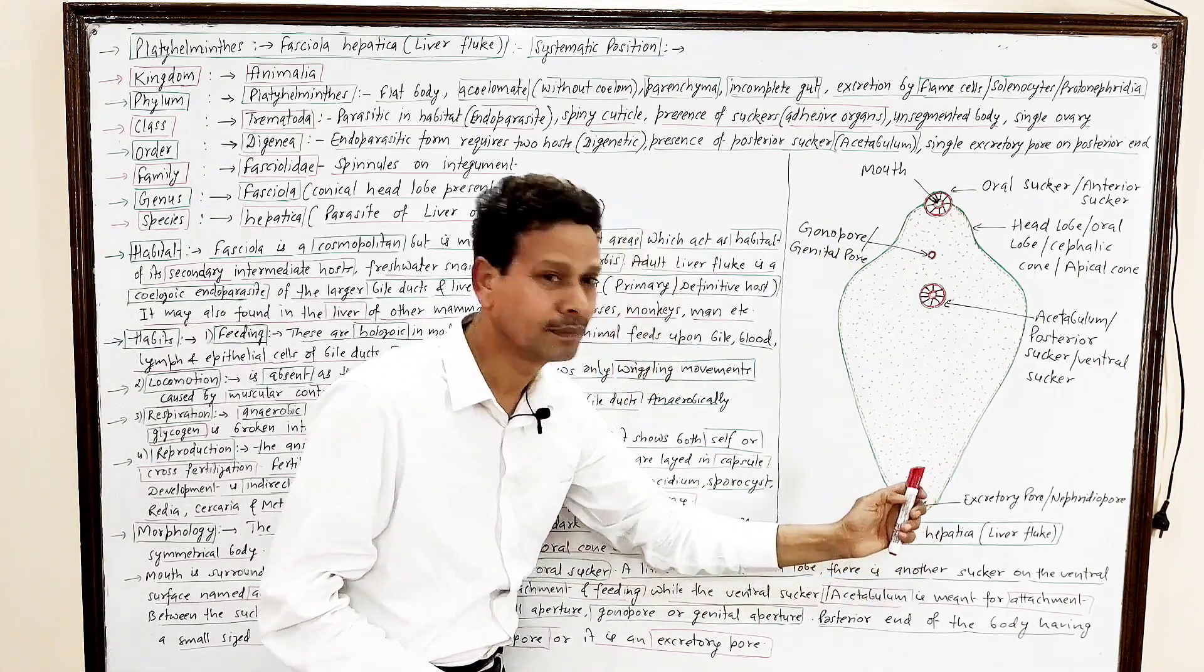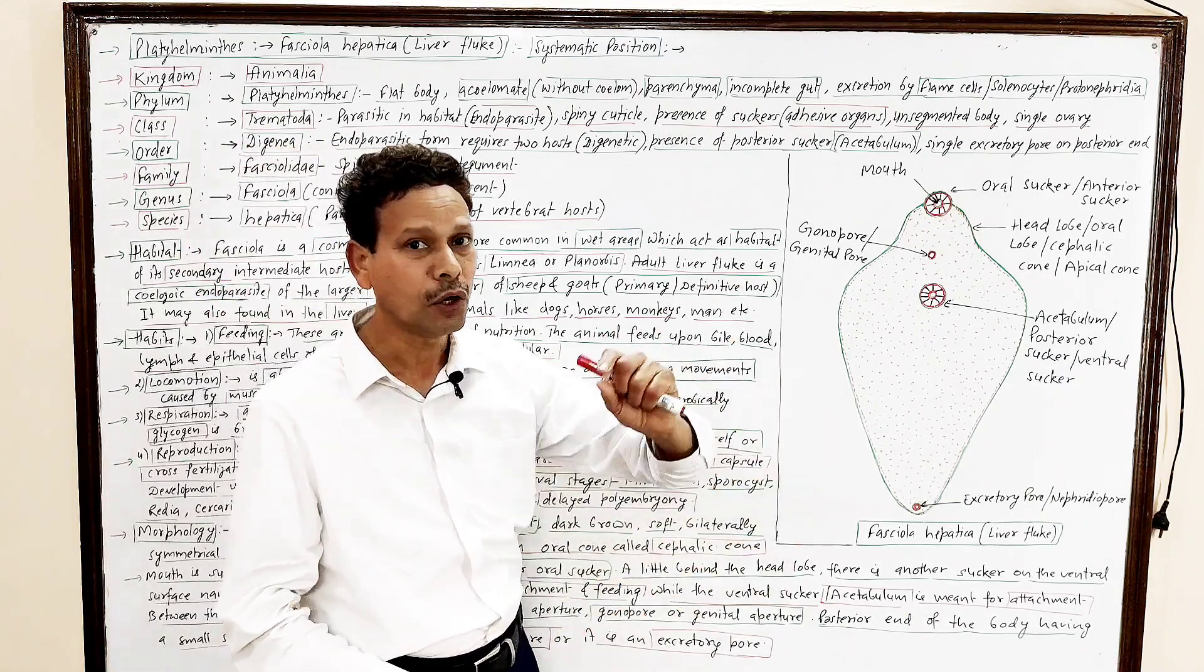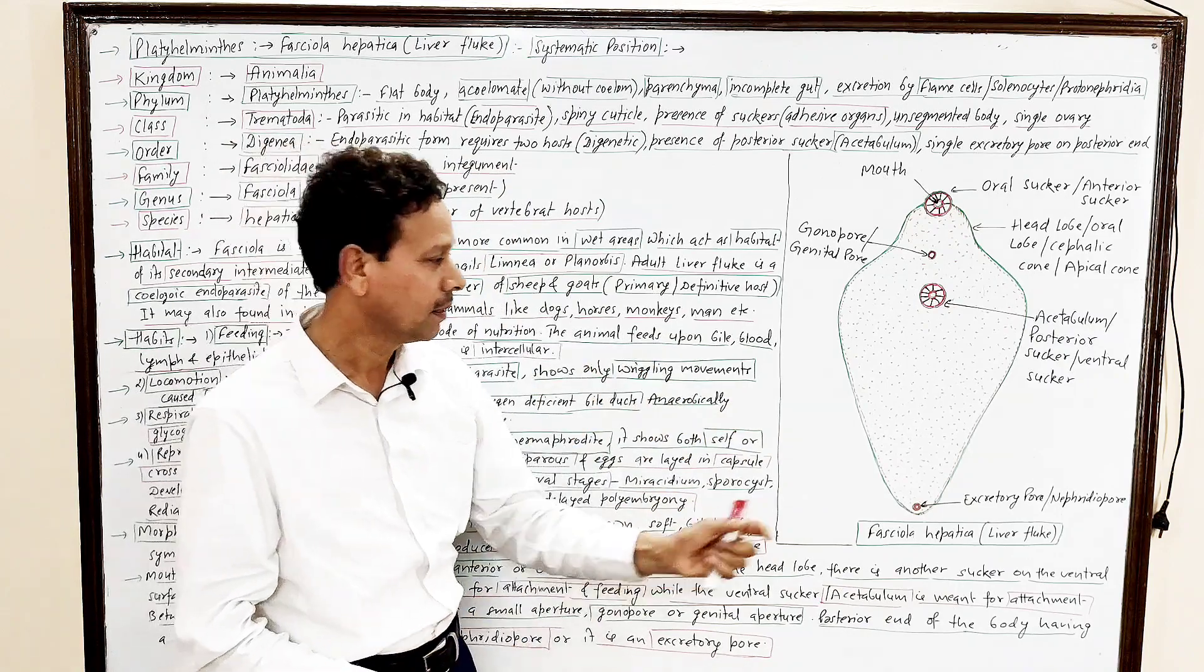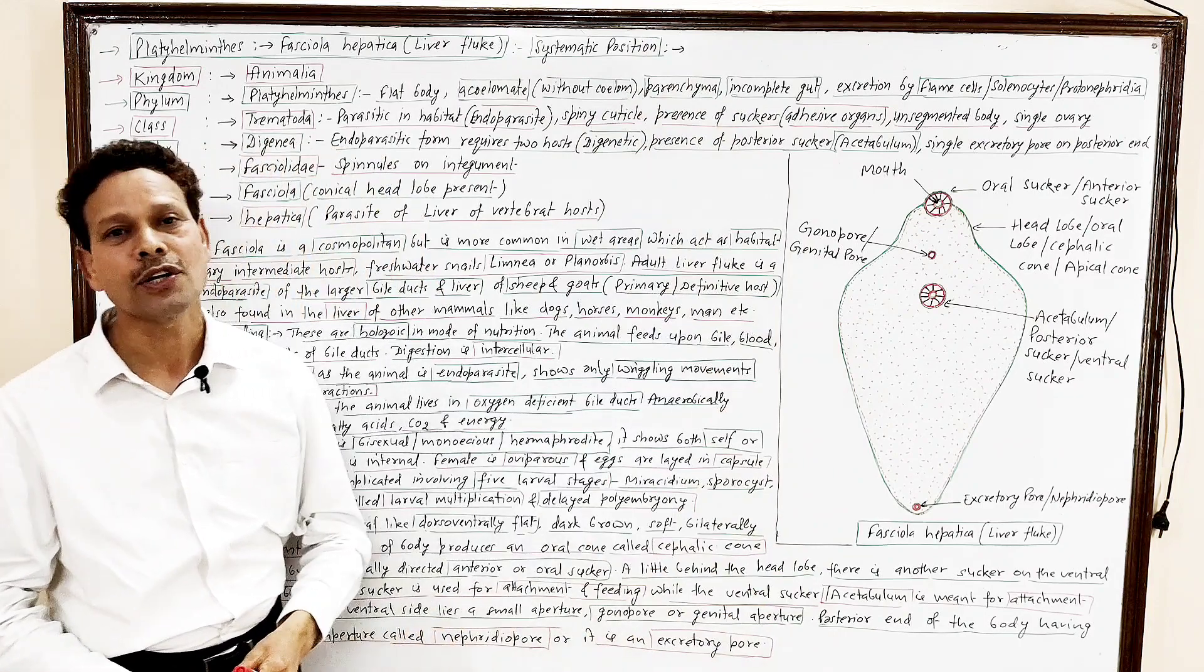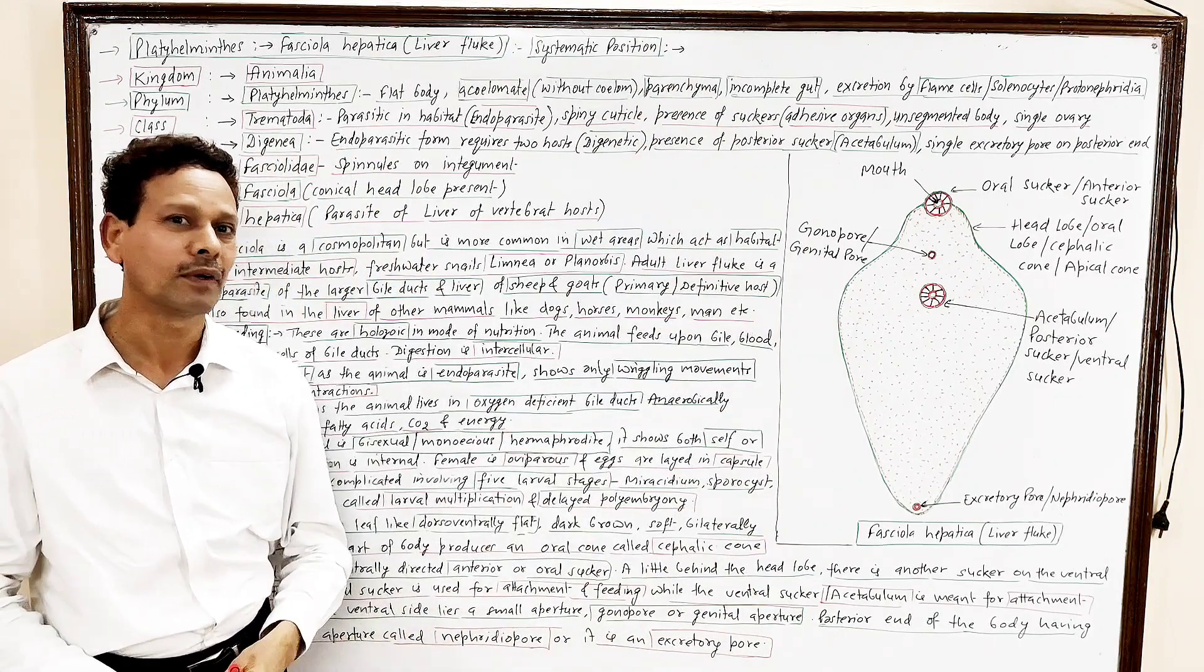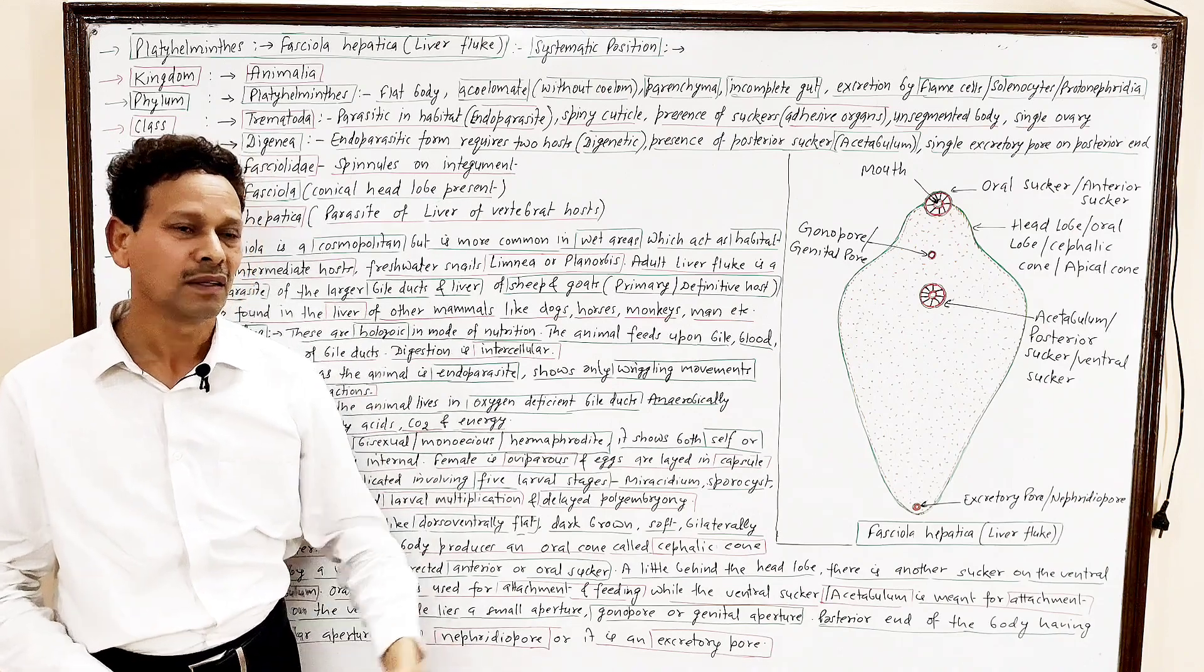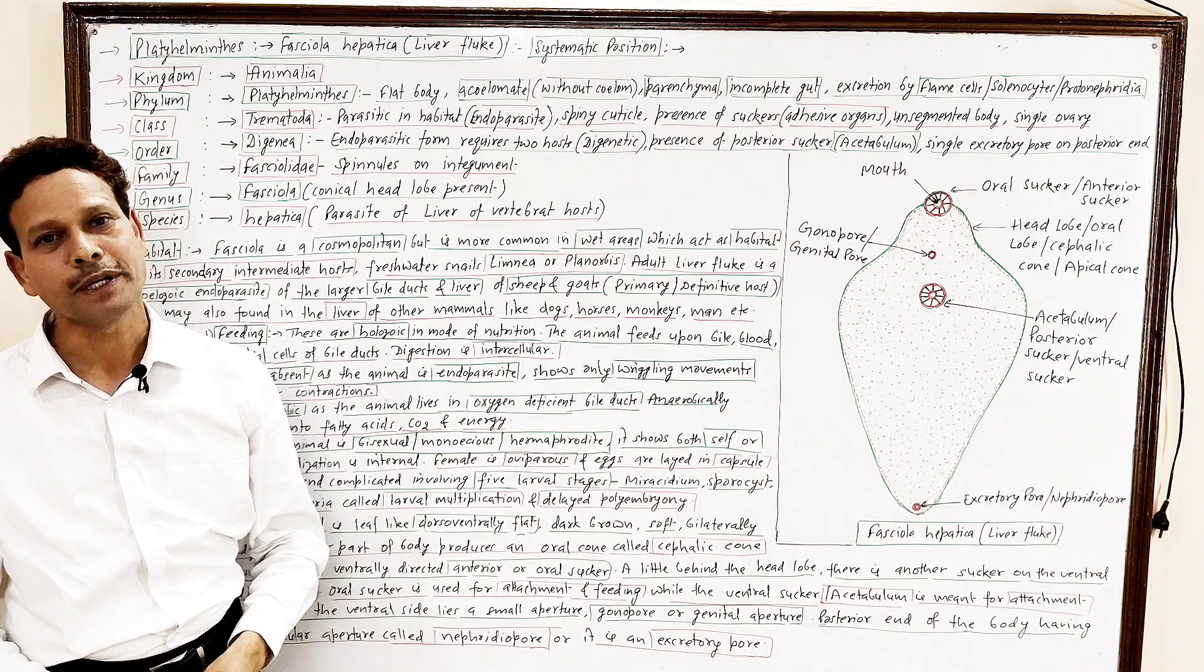In this posterior end, another aperture is there. Note down, this is excretory pore. Note down, dear students, this is nephridiopore. This is all about general introduction, liver fluke, Fasciola hepatica. In tomorrow's lecture, we will discuss its systems, digestive system, respiratory system is absent.